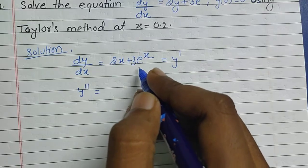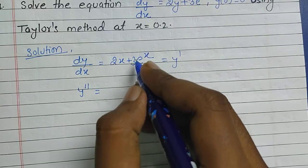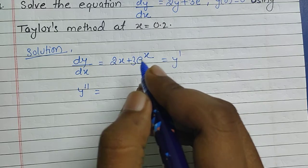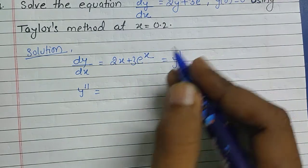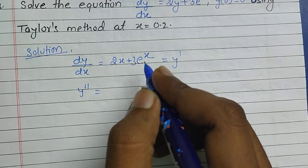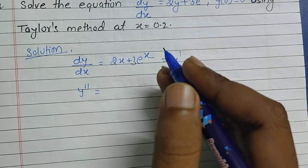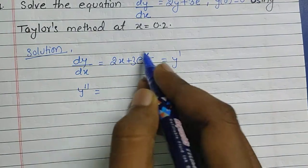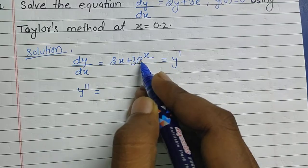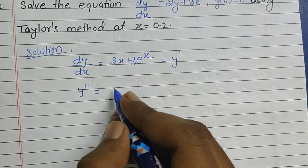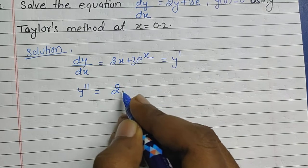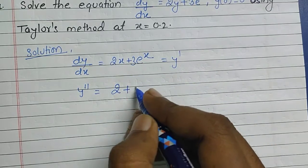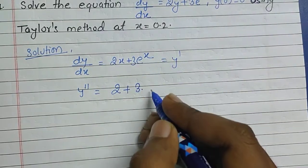For solving the equation by Taylor's method, one must have good knowledge of derivatives. We do not need any extra knowledge, but we should know how to solve simple derivatives. Finding the derivative of this equation with respect to x, we get: 2 + (dx/dx = 1), and 3 times the derivative of e^x, which is e^x.